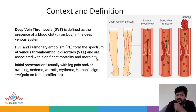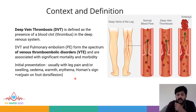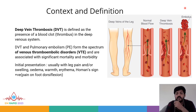The initial presentation to the emergency department will be with leg pain, swelling, edema, warmth, erythema, and on examination you may get pain on dorsiflexion of the foot, which we call the Homan's Sign. However, we are not supposed to perform a Homan's Sign if we suspect Deep Vein Thrombosis, because there are high chances that the thrombus inside the deep veins may become an embolus and travel to the lungs, causing the much more fatal complication of pulmonary embolism.